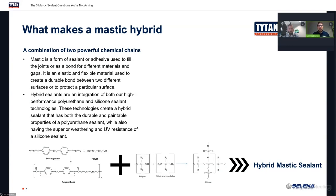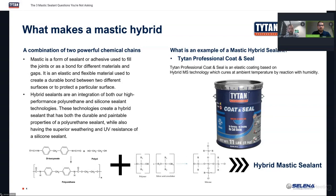I want to give you an example of what a mastic hybrid sealant looks like. Here at Titan Professional — Selena USA — we actually have one. This is our Titan Professional Coat and Seal, and it uses the technology of polyurethane and silicone combined to be a hybrid. Now you might be thinking — well, I know polyurethane has some downsides, and I know silicone has some downsides.